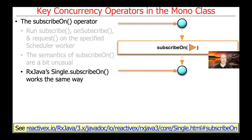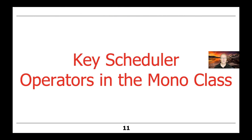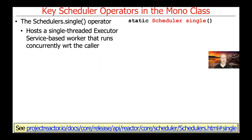There's a similar method called subscribeOn that's part of RxJava's Single class, and it basically behaves exactly the same way. Now let's turn our attention to this concept of a scheduler operator. schedulers.single is a factory method that will create a scheduler — specifically a single-threaded executor service-based worker that runs concurrently with respect to its caller.